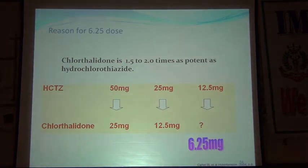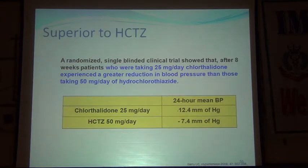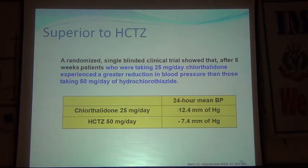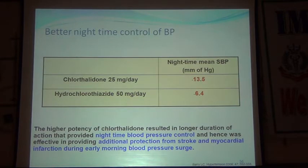Chlorthalidone is one and a half to two times as potent as hydrochlorothiazide — chlorthalidone 6.25 mg is equal to hydrochlorothiazide 25 mg. The data shows chlorthalidone 25 mg achieves a 12.4 mmHg BP reduction compared to hydrochlorothiazide 50 mg which reduces BP by only 7.4 mmHg.